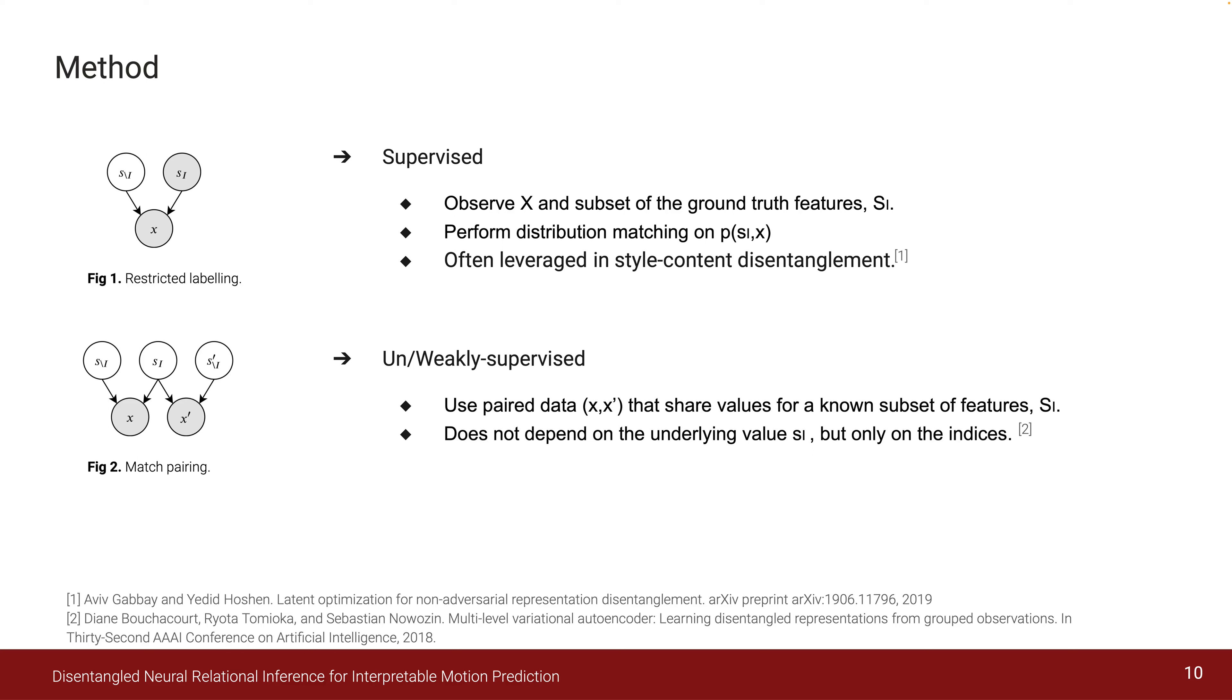First, we have restricted labeling, which matches distributions based on observed samples x and a subset of ground truth features, which we denote here as S_i. Then we have pair matching, which is an unsupervised approach focusing on paired data, so we have x and x prime with a subset of common feature values. It can be deemed a weakly supervised approach.